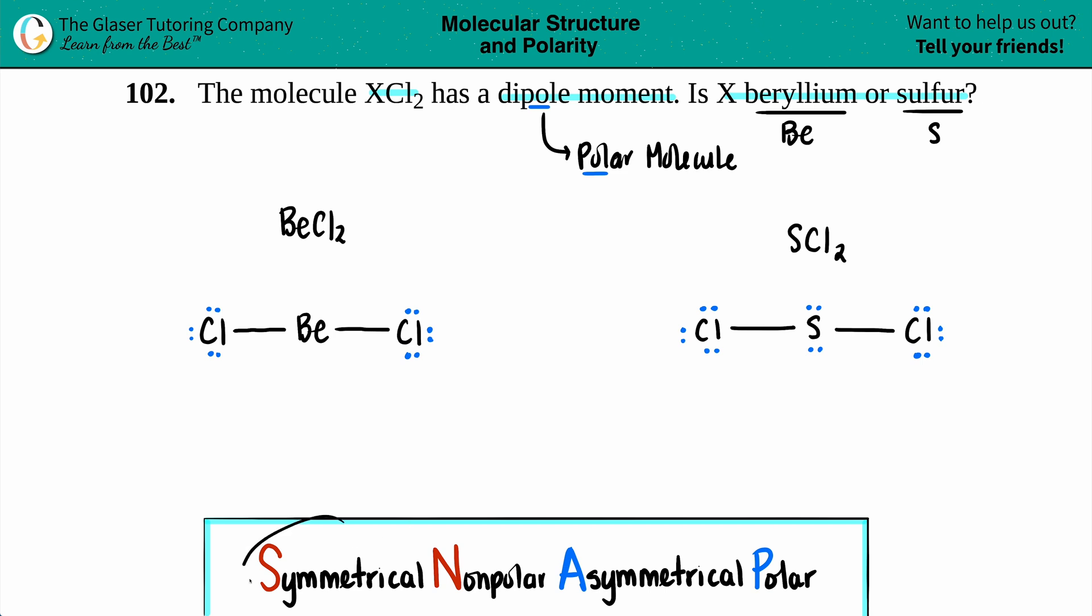Now you could always SNAP it out. Here's the acronym: SNAP, to just make sure that you put together nonpolar molecules and polar molecules. If your molecule is completely symmetrical, that is a nonpolar molecule, and nonpolar molecules have no dipole moment. Asymmetrical or polar molecules, these will have the dipole moment.